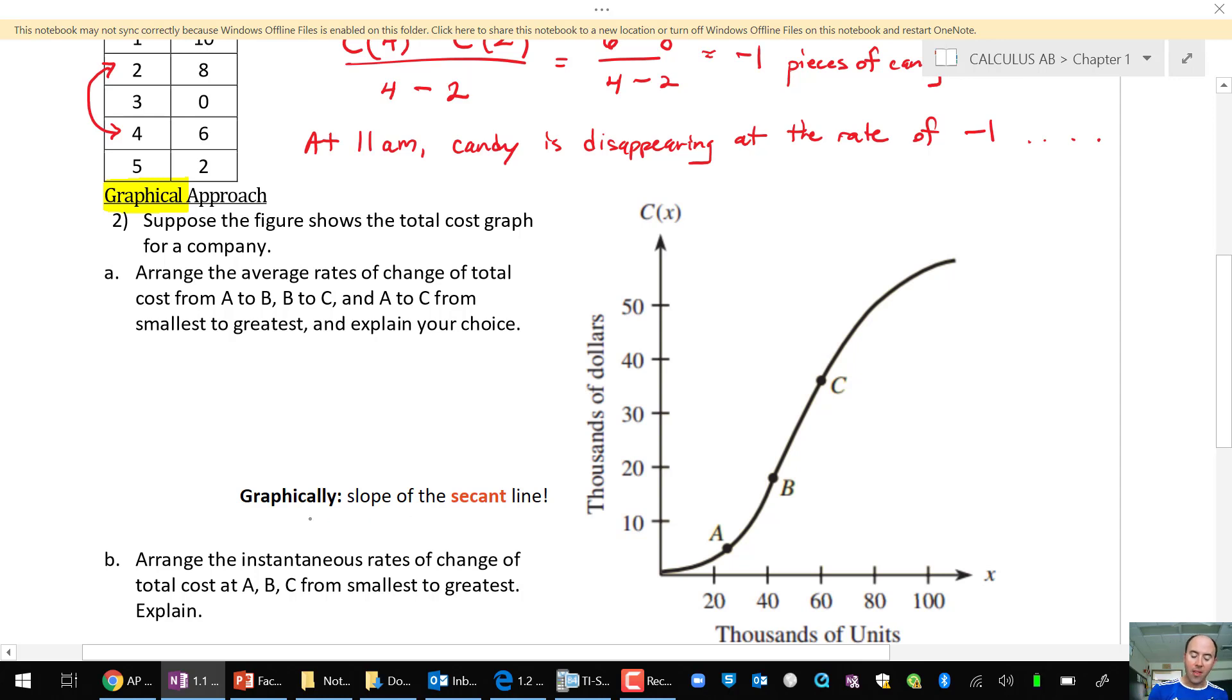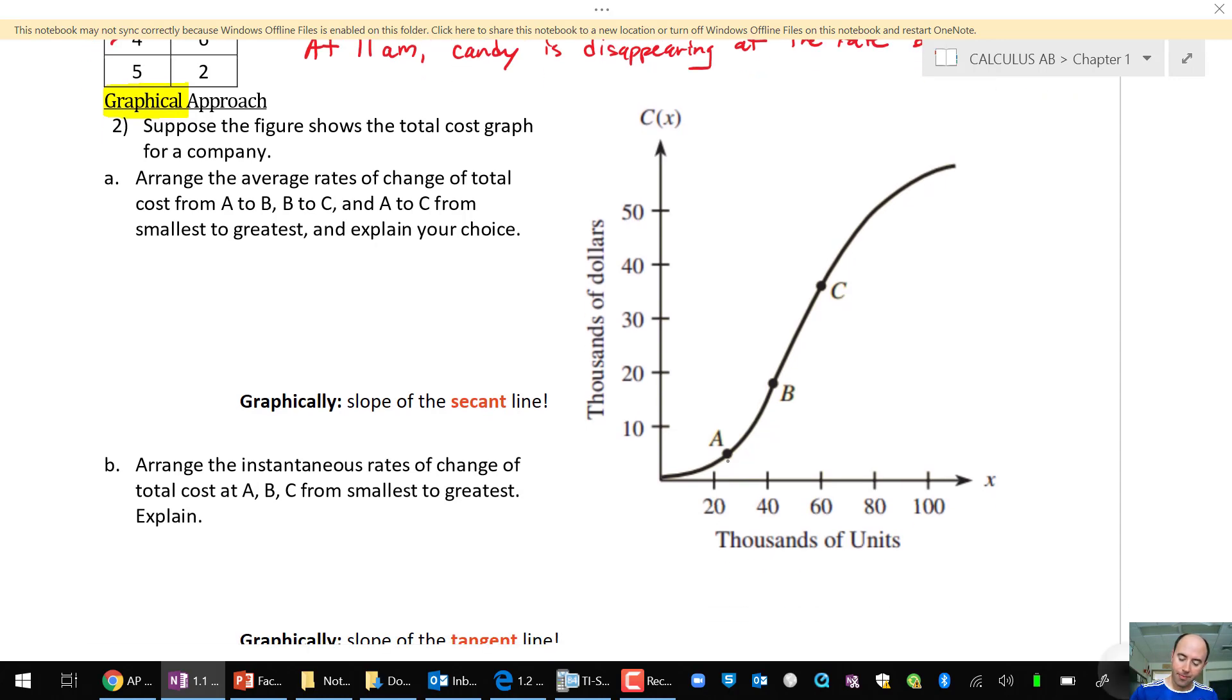Remember graphically that the average rate of change is the slope of the secant line. For example, a line that goes through point A and point B, which is secant, the slope of that line would be our rate of change. It looks like we go a little bit steeper from B to C, and then A to C might be somewhere in the middle of those two slopes. So I might say that the smallest slope of the secant is A to B. The greatest or the steepest might be B to C.